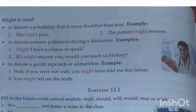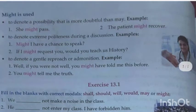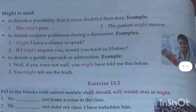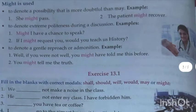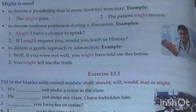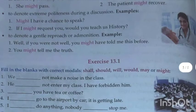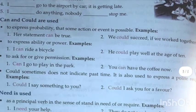Might denotes possibility, but it is more doubtful than may. May is more assurance than might. For example: She might pass. Might is also used for extremely polite requests: Might I have a chance to speak? To denote gentle reproach: You might have told me before; you might tell me the truth.